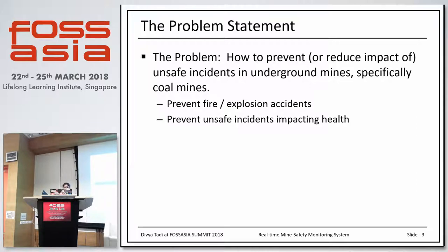The technical solution involves two units: the sensor unit and the monitoring unit. In the sensor unit, we have sensors for methane, carbon monoxide, temperature, and humidity. These sensors are connected to the microcontroller, which acquires sensor data, processes the data, controls the buzzer and LED, and transmits the data to the ZigBee.